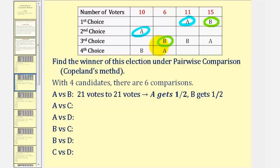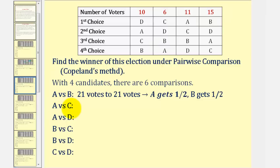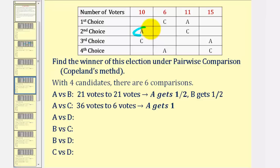Next, for A versus C, we'll remove B and D from the table. Notice A is preferred here, here, and here, so A receives ten plus eleven plus sixteen, or thirty-six votes. And C receives six votes. A wins and gets one point.